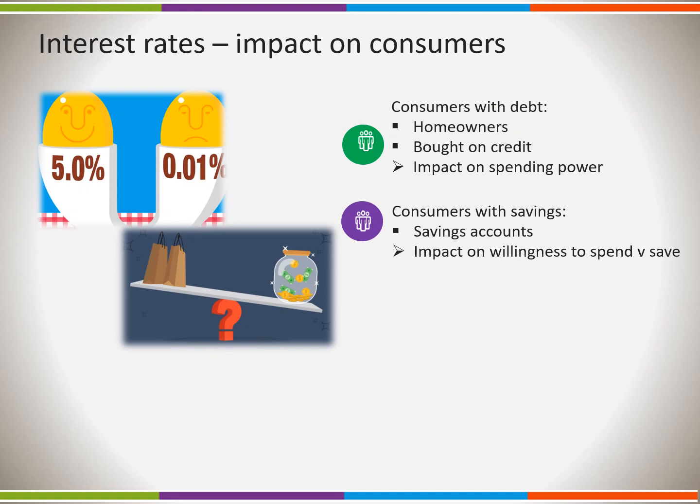Secondly, interest rates affect decisions to save or spend. If interest rates are high, so is the reward for saving. This makes saving more attractive and spending less attractive. Consumers may cut expenditure. In economics, we refer to this as the marginal propensity to spend — i.e. for each extra £1 we receive, how likely we are to spend it rather than save it.